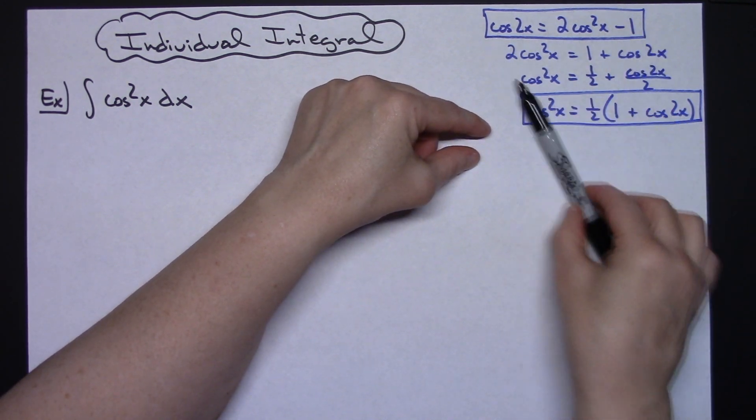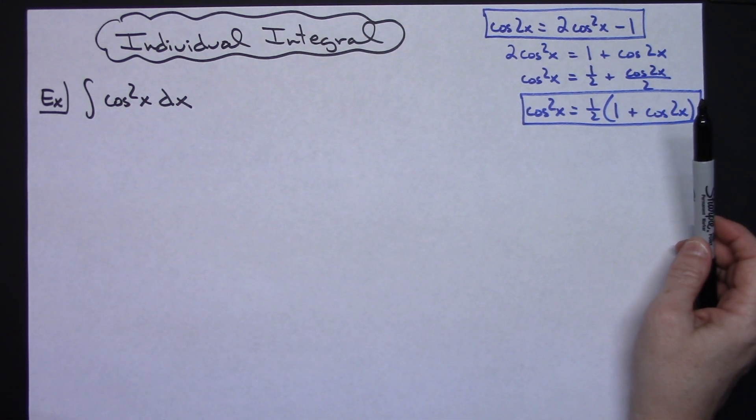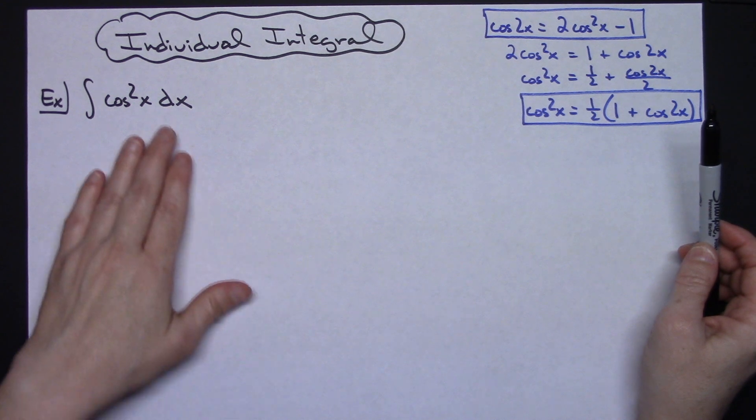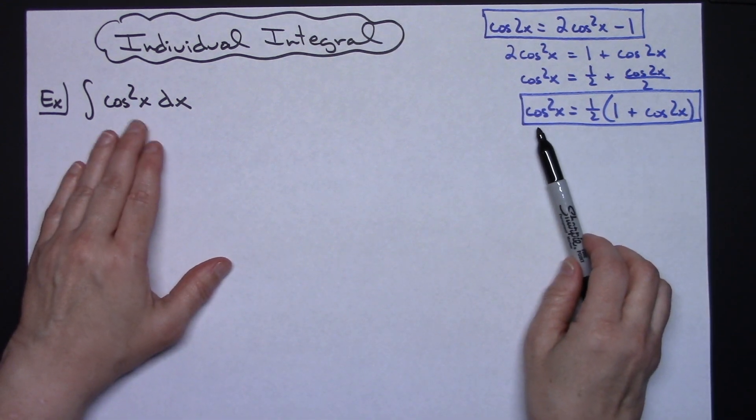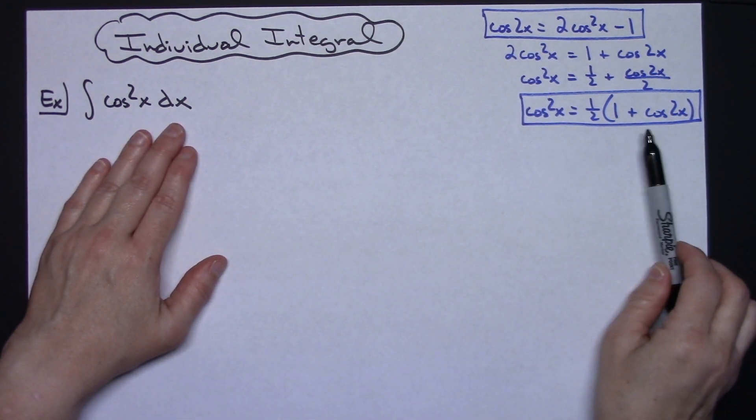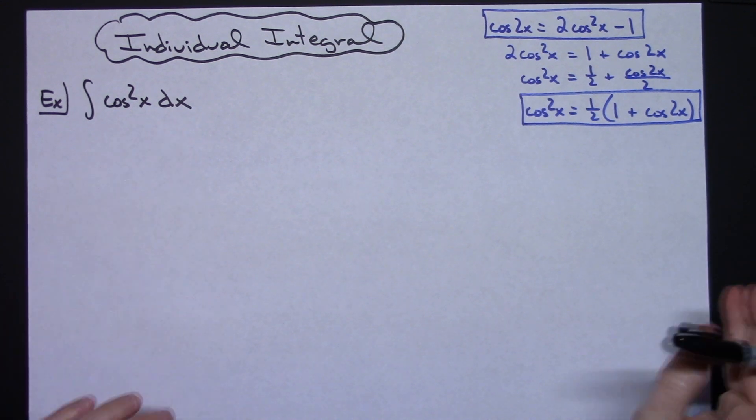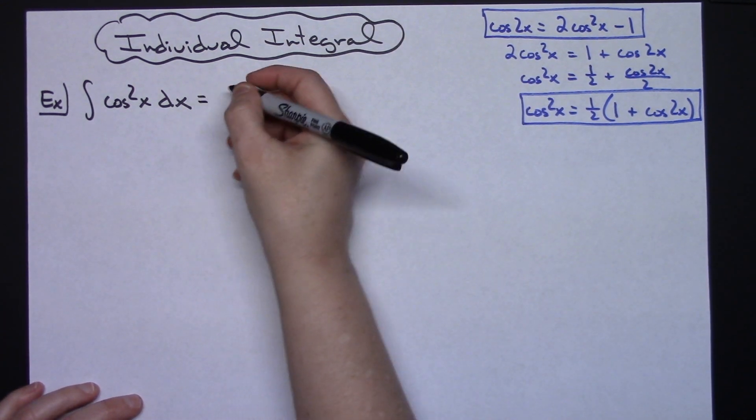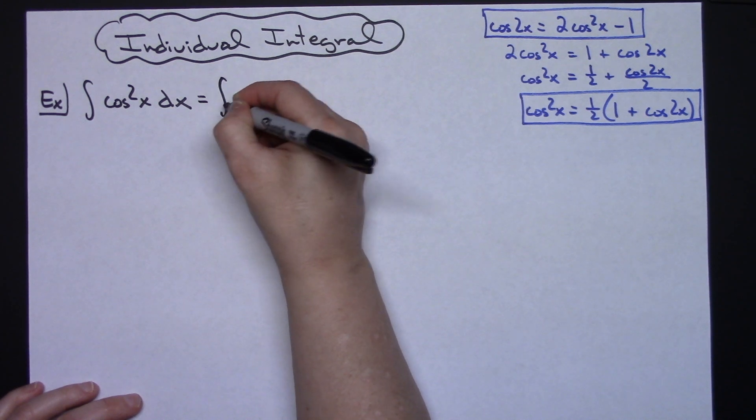Really this right here is your background information or your thing that you need to be really familiar with to be able to work this. Now I've got cosine x and I can do a nice little substitution here with this identity right here. So that's what we're going to do first. Right off the bat, we're going to make that substitution.